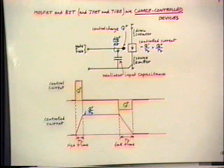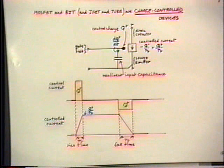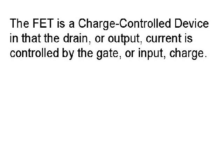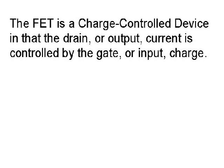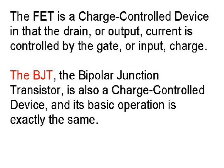The minimum attainable values of the rise time and fall time are on the order of the mean transit time of the electrons through the active region of the device — namely the channel. The FET, the field effect transistor, is a basic charge control device in that the drain or output current is controlled by the gate or input charge. The BJT, the bipolar junction transistor, is also a charge control device and its basic operation is exactly the same.